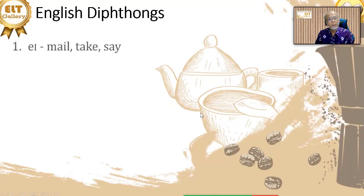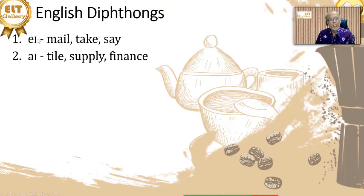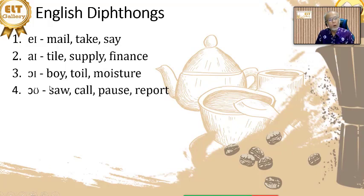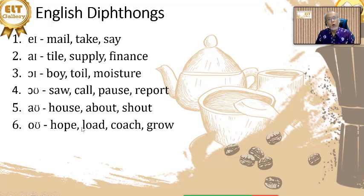For English diphthongs: the AI diphthong is sometimes written with Y. The diphthong in 'tile,' 'supply,' 'finance' — instead of writing with small E, capital I or I with Y is often used. The OI in 'toil' and 'moisture' uses an O symbol. The diphthong in 'house,' 'about,' 'shout' is written with AU. And then the diphthong in 'hope,' 'load,' 'coach,' and 'grow' has its own symbol.